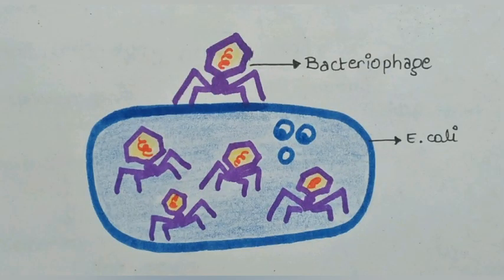Bacteriophages attach to the bacteria and their genetic material then enters the bacterial cell. The bacterial cell treats the viral genetic material as if it was its own and subsequently manufactures more virus particles.